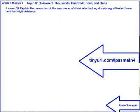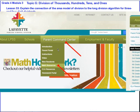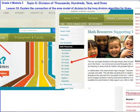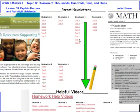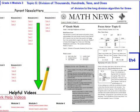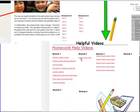That's going to do it for Lesson 33. We've been working to explain the connection of the area model of division to the long division algorithm for 3 and 4-digit dividends. You can get a collection of the videos at tinyurl.com/LPSSMath4, or go to LPSSONline.com, hover over Parent Command Center, scroll down to Math Resources, click on fourth grade. This is the last lesson for Topic G, and you can get the newsletter and helpful videos there.